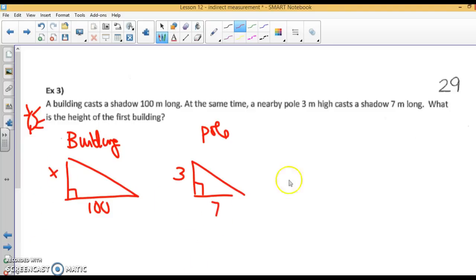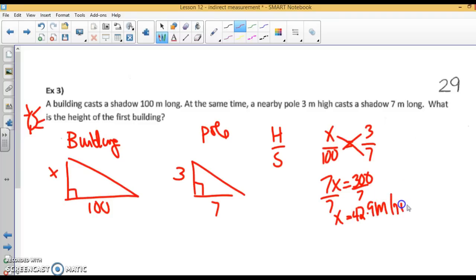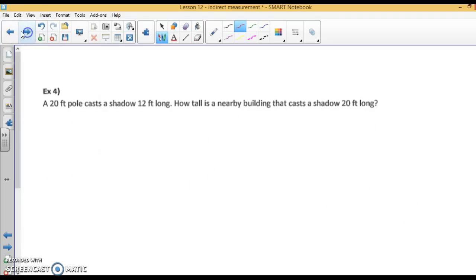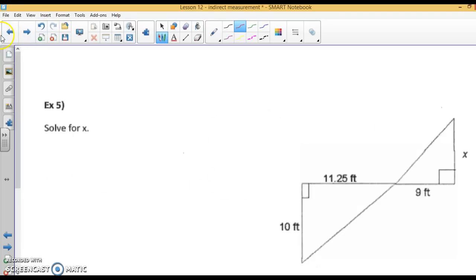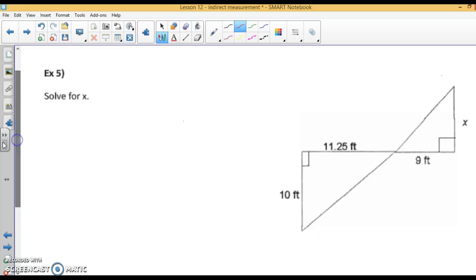Let's set up a proportion, height over shadow. We'll have x over 100 equals 30 over 7. Cross-multiply. 7x equals 3000. Divide both sides by 7. x is 428.6 meters. I'm not going to do example 4 because it's exactly like the others. But I do want to look at example 5. This is a tricky problem.